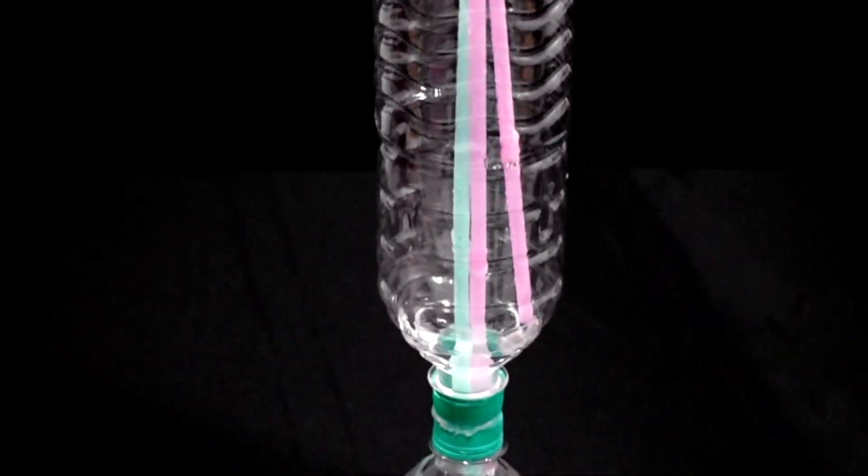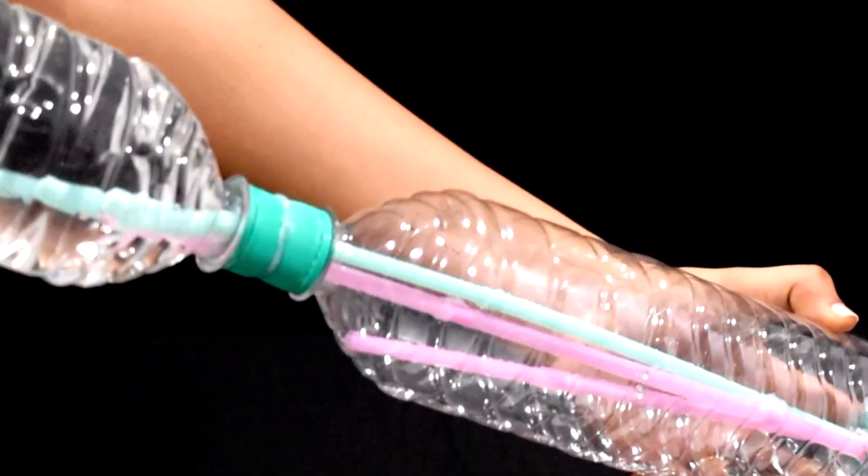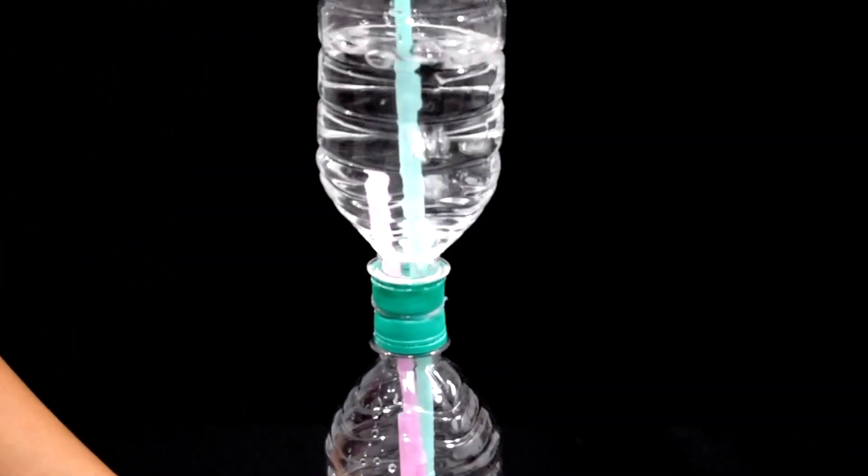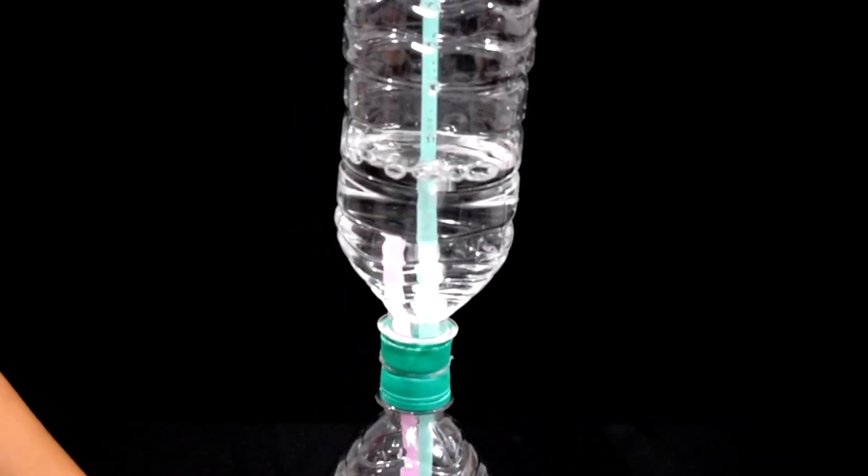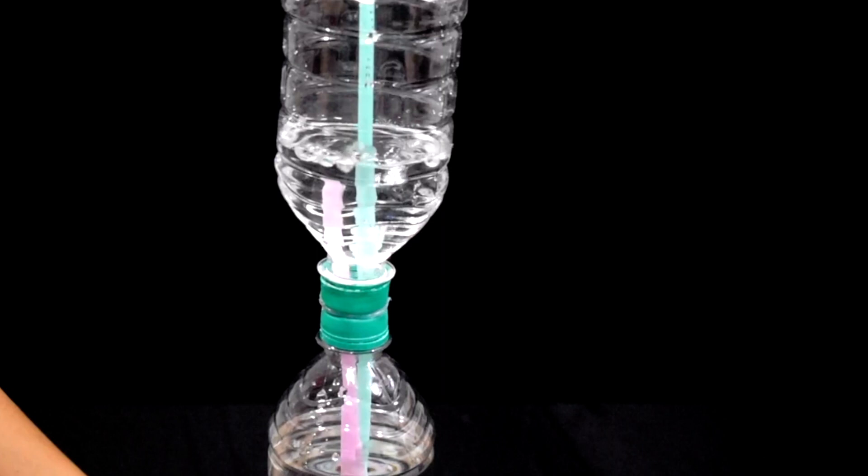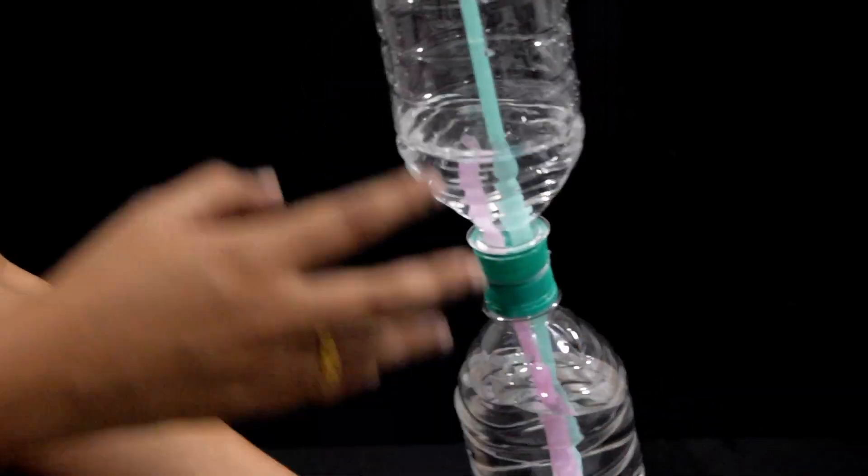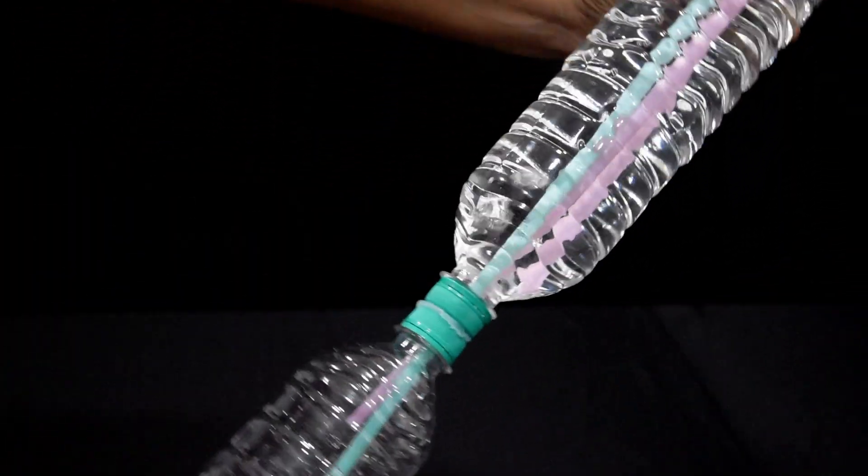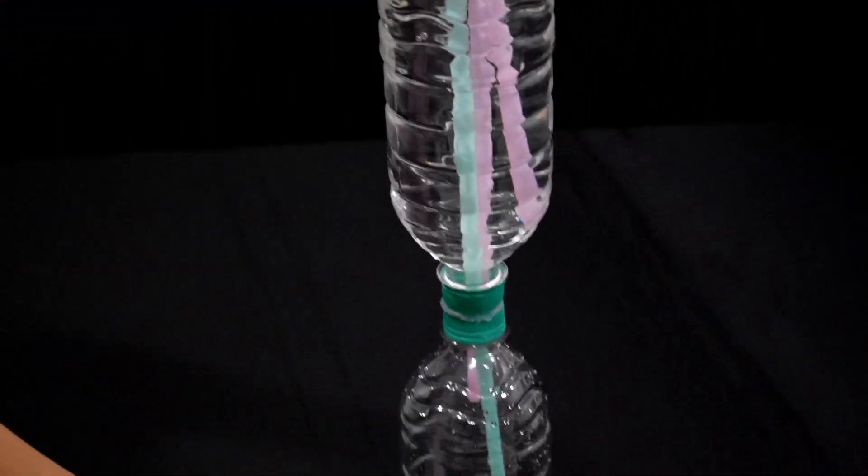Next we need to turn it upside down so the water runs through the pink straw into the middle bottle. When water fills up in the middle bottle, turn it back around and stand it up. It's now primed and ready.